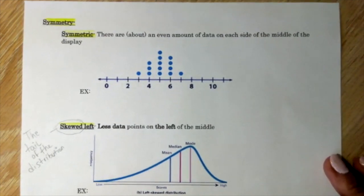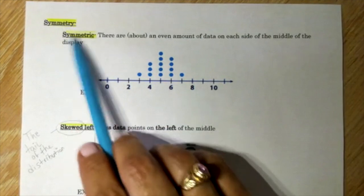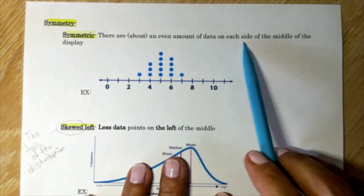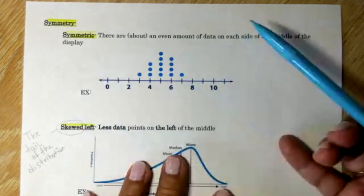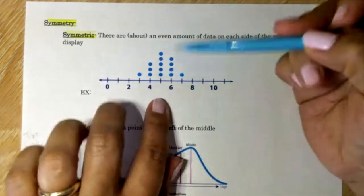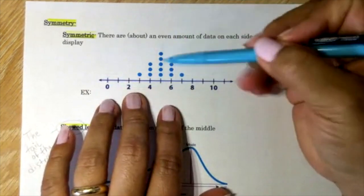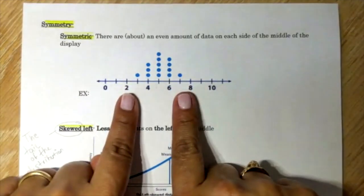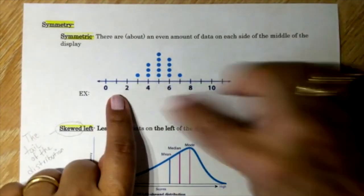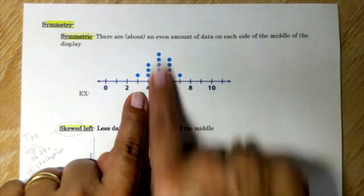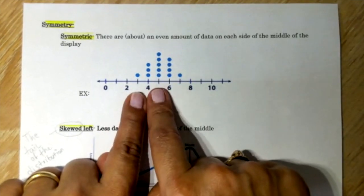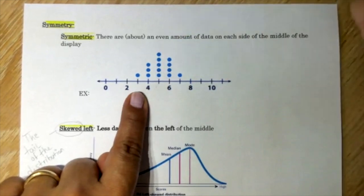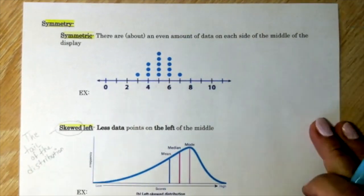Symmetry, symmetric - there are about an even amount of data on each side of the middle of the display. Here we have a dot plot. If you look at it, it's pretty symmetrical. It's kind of like looks like it has the same amount or even amount of data on each side. The peak will be at five, or the mode, you can say is five. It's the number that repeats the most.